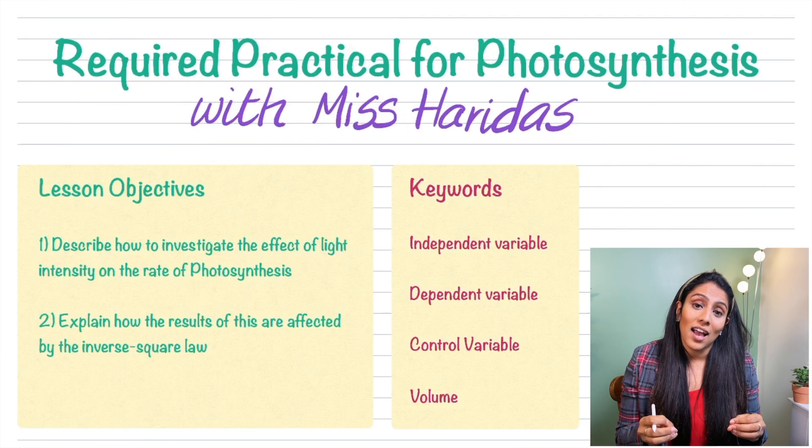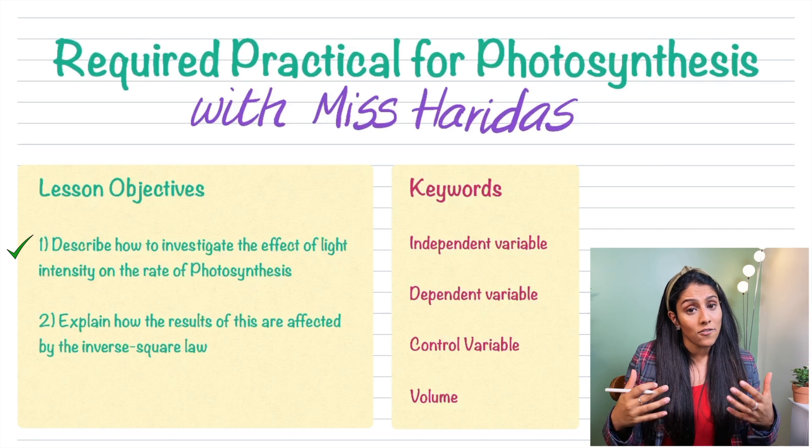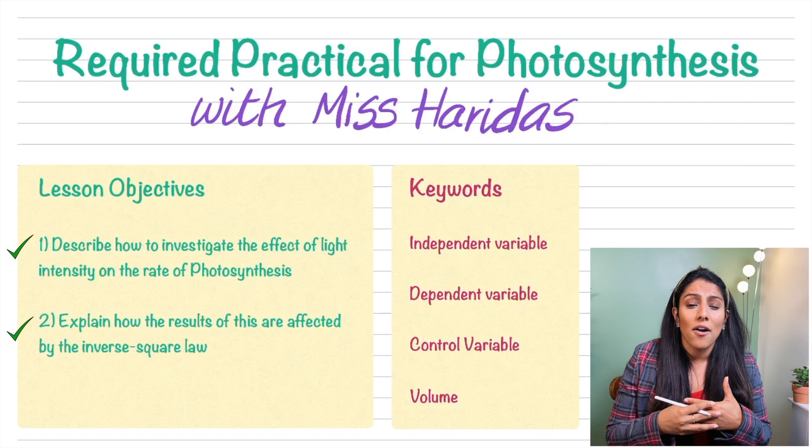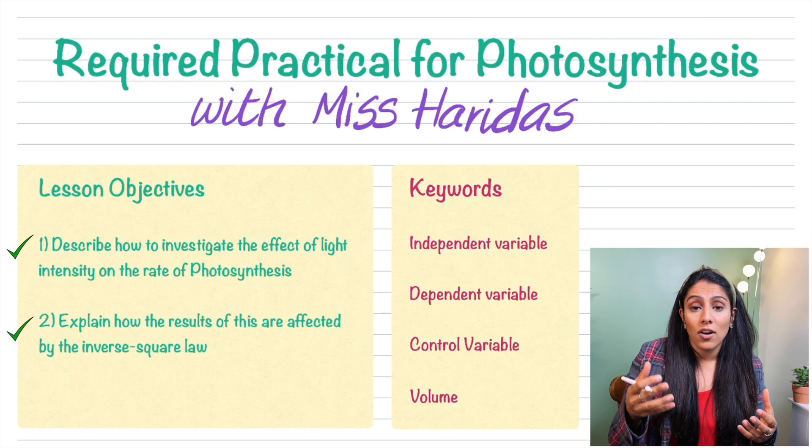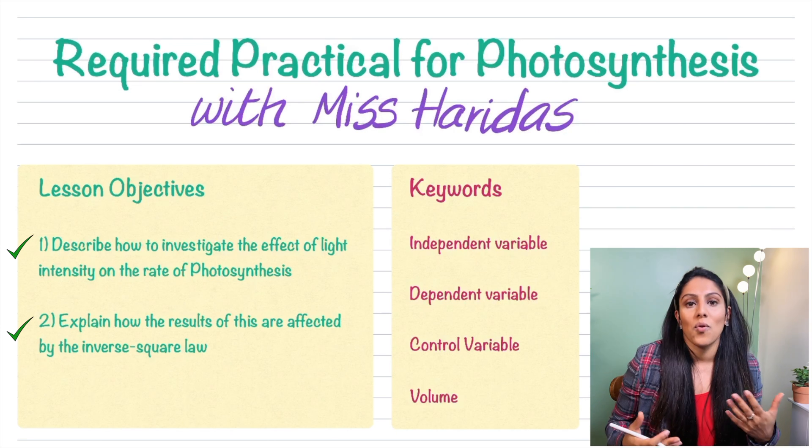Today's lesson objectives: we're going to look at how light intensity affects the rate of photosynthesis, and if you're doing higher tier we're going to explain how these results are affected by the inverse square law. I've got a couple of key words there that you want to pay attention to because they're going to come up throughout this lesson.